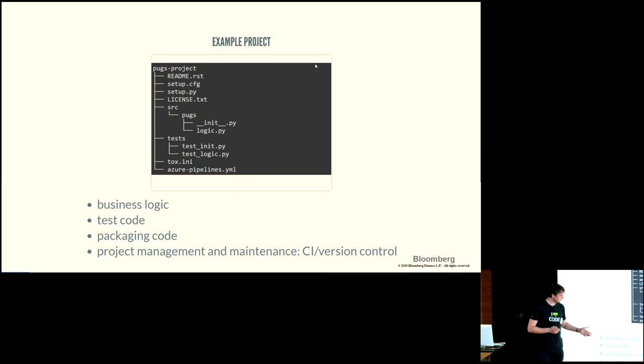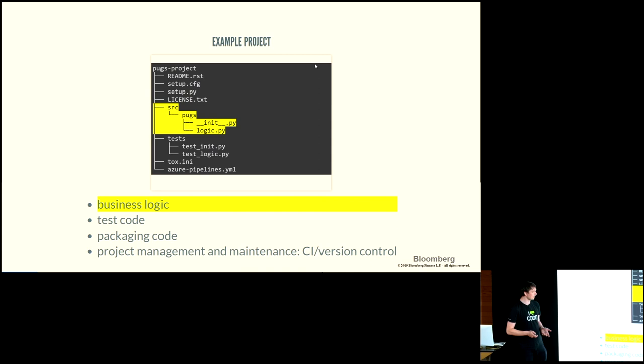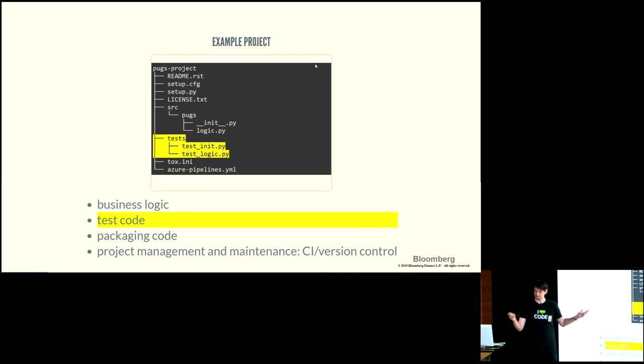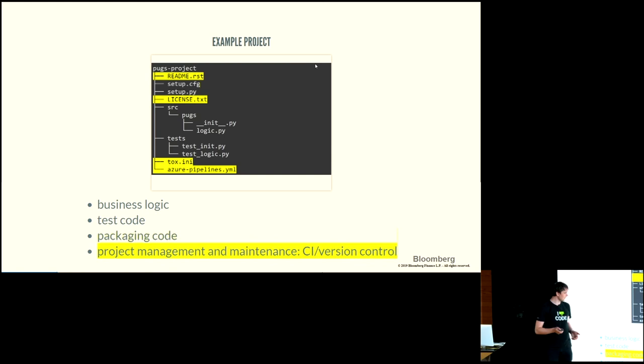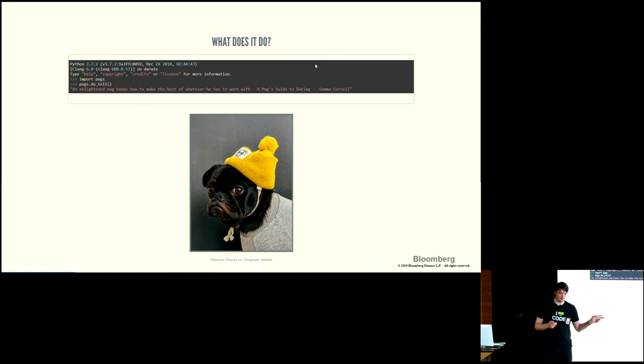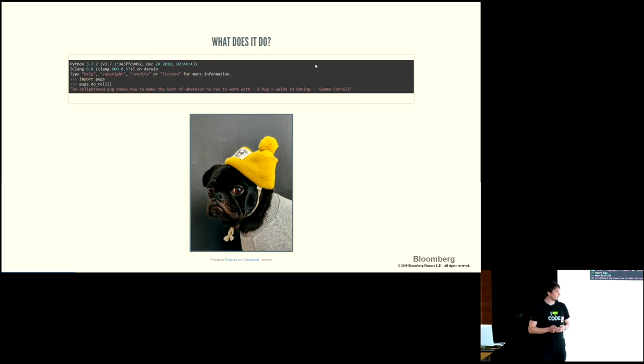I brought this lovely little project. A basic Python library looks like this nowadays: it has some logic, whatever you want to implement; you write some tests because you want to validate it actually does what you want; you have some packaging information telling you how to package your stuff; and some additional files for CI or your git repository. This library — 'pucks' — tells you lovely quotes from the point of view of pucks, like: 'An enlightened puck knows how to make the best of whatever he has to work with.' So let's try to make the best of what we have in the Python packaging world.